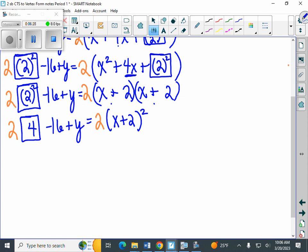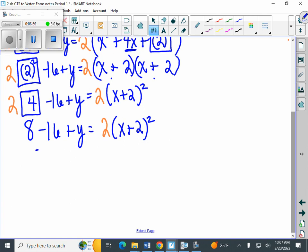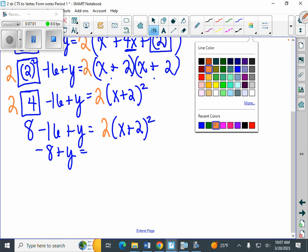And maybe you type it into your calculator. I'm going to show a little bit more work, but still simplifying over here on the left side. 2 times 4 is 8. Minus 16 plus y equals 2 times x plus 2 squared. 8 minus 16 is negative 8 plus y equals 2 times x plus 2 squared.